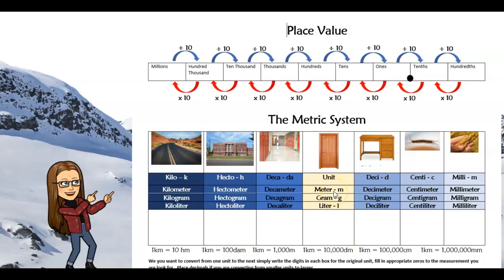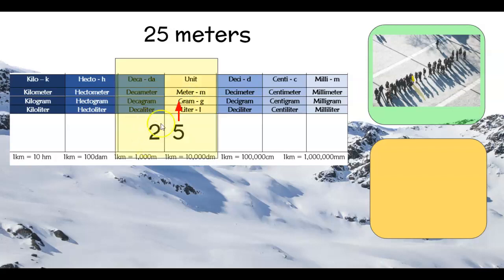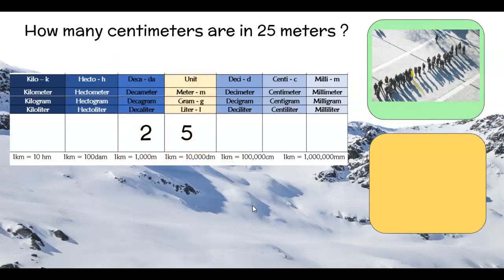We understand our metric system units separately, but going back and forth can be confusing. Using this chart — just like a place value chart — we align numbers into each column, where each column holds one digit. For 25 meters, I find the meters position, put my last digit there, and all other digits go to the left. Since it's a whole number with no fractions of meters, I place 25 right there.